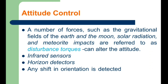Disturbances such as the gravitational fields of the earth and moon, and solar radiation, can alter the attitude. We can use infrared sensors to find any deviation or shift in the satellite's orientation in space.